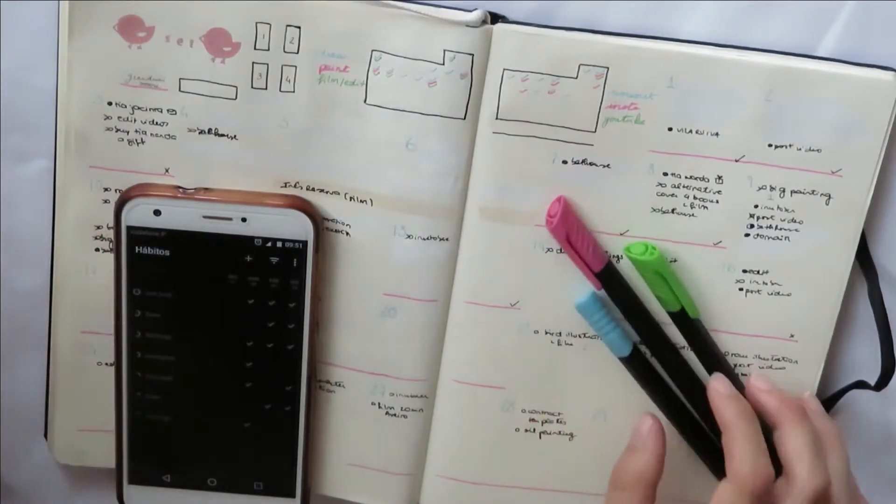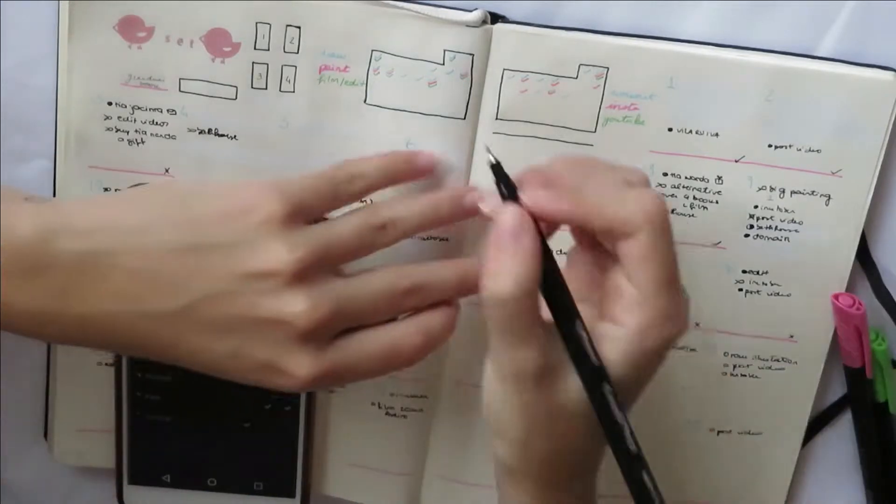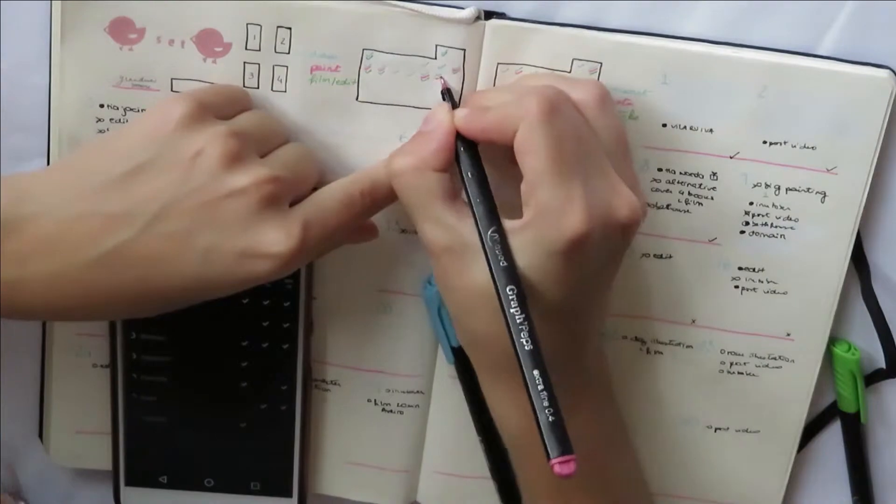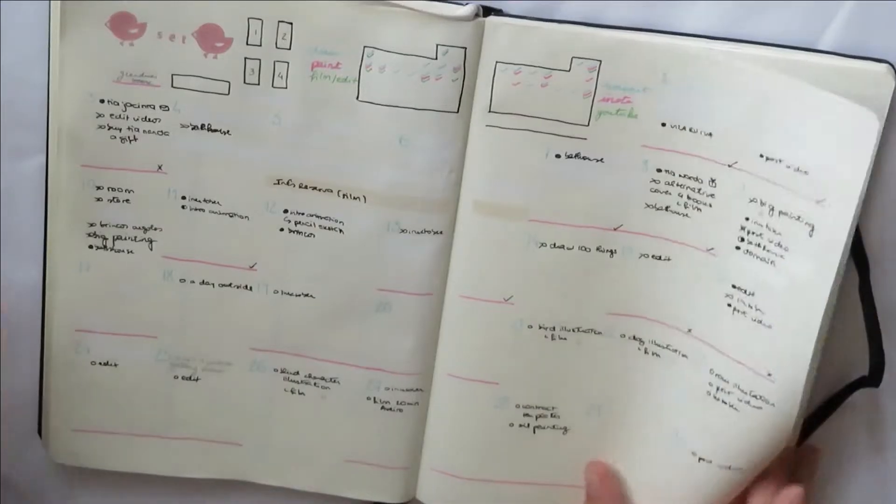So every habit has a different color. The apps I'm using to track my habits are Loop, and the app I use to track my to-do lists is TikTok.